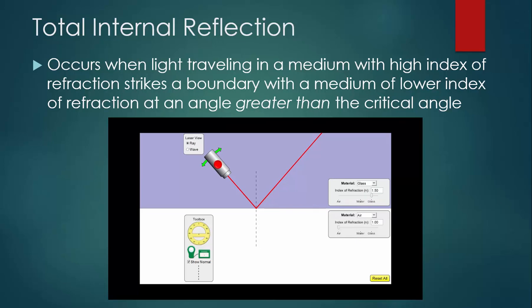When the incident angle is larger than that, all of the light is reflected internally and none of it is refracted.